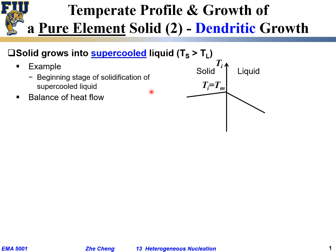Now let's consider the balance of heat flow again — all the terms remain the same. We plot left side solid, right side liquid, same as before. In this case, because the liquid is supercooled, the liquid temperature is lower, so the heat flow would be from the high temperature in the solid on the left into the low temperature in the liquid on the right — from solid to liquid, because the solid is hotter than the liquid.